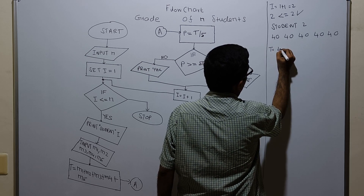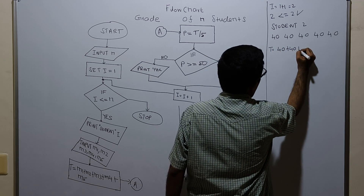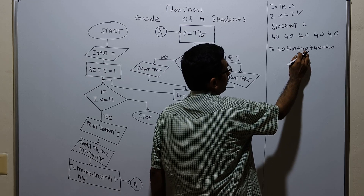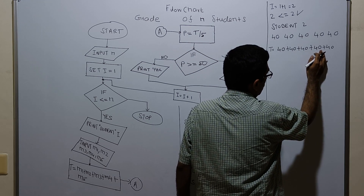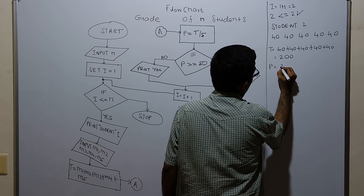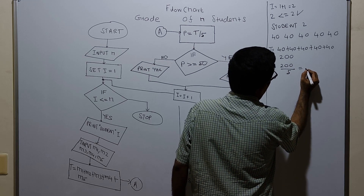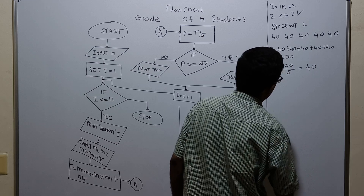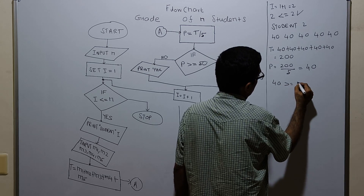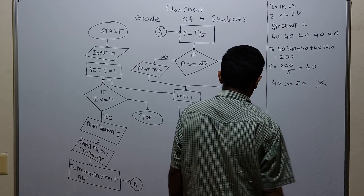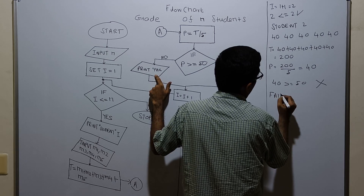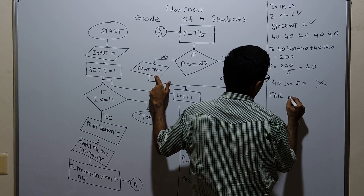Total equals 40 plus 40 plus 40 plus 40 plus 40. That is 80, 120, 160, 200 — which equals 200. Percentage equals 200 divided by 5, which equals 40. Checking: 40 greater than or equal to 50 is false. So the grade is failed for student 2.